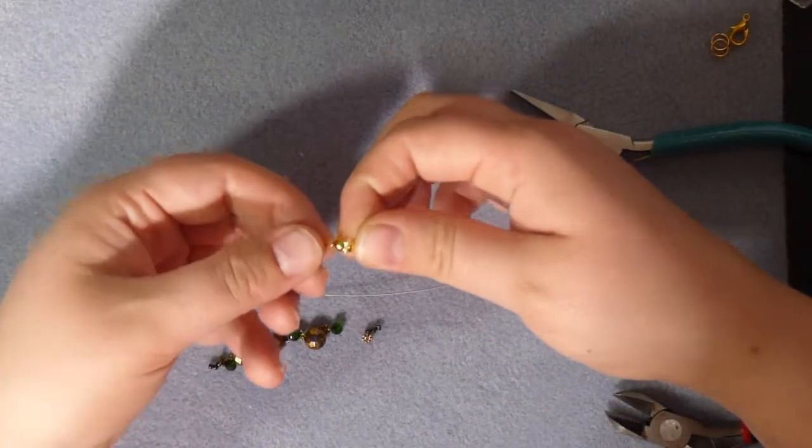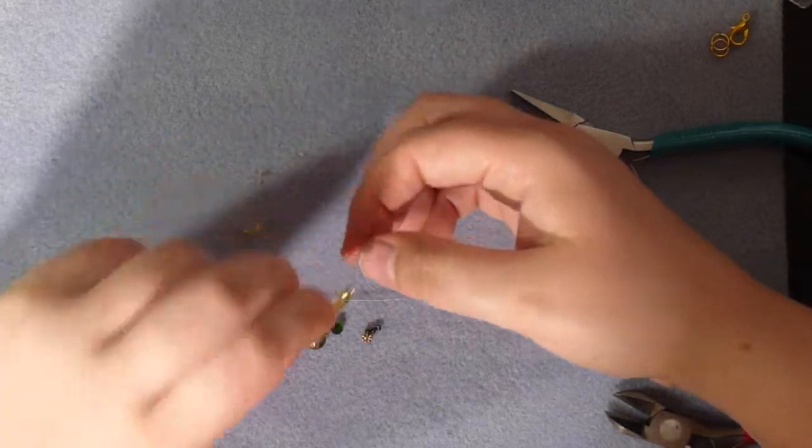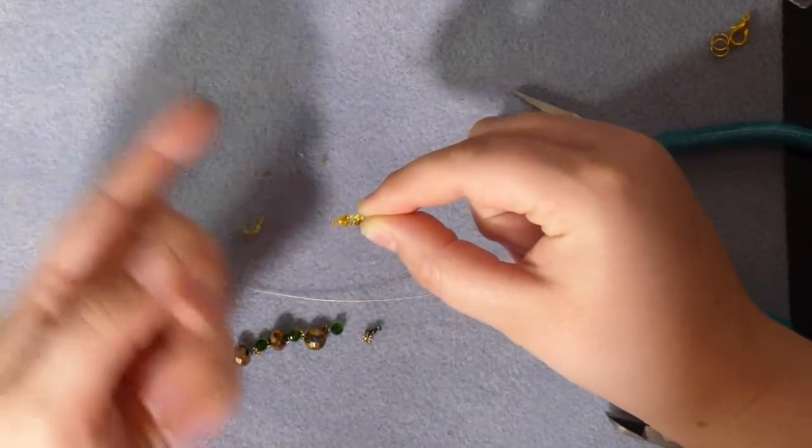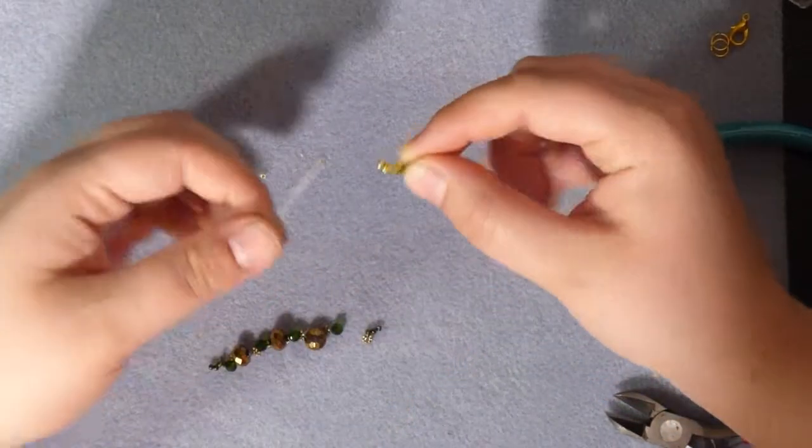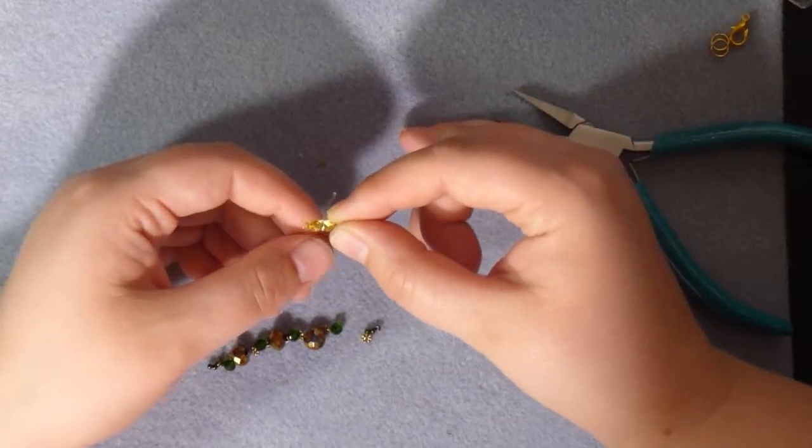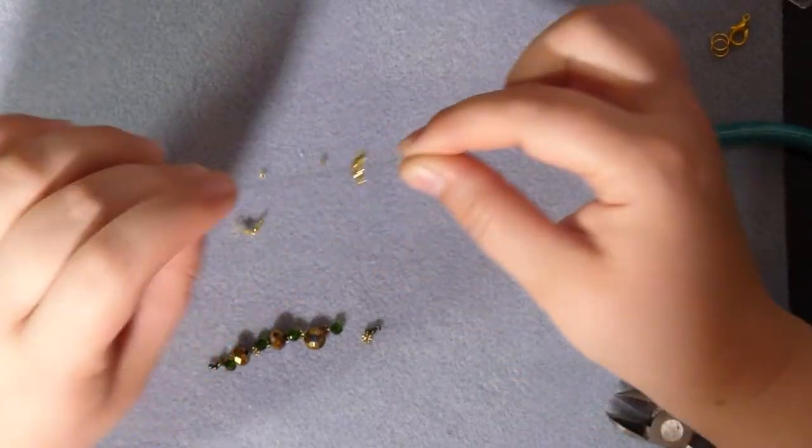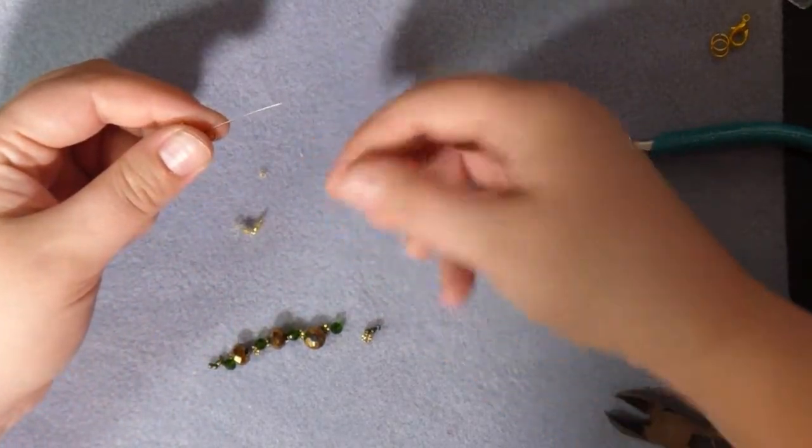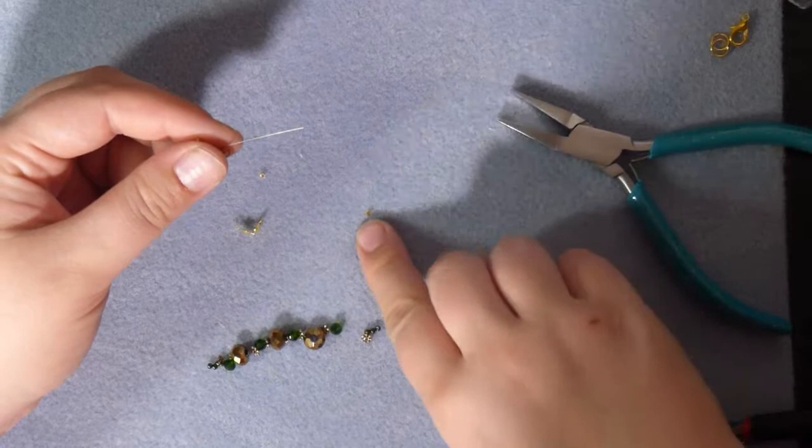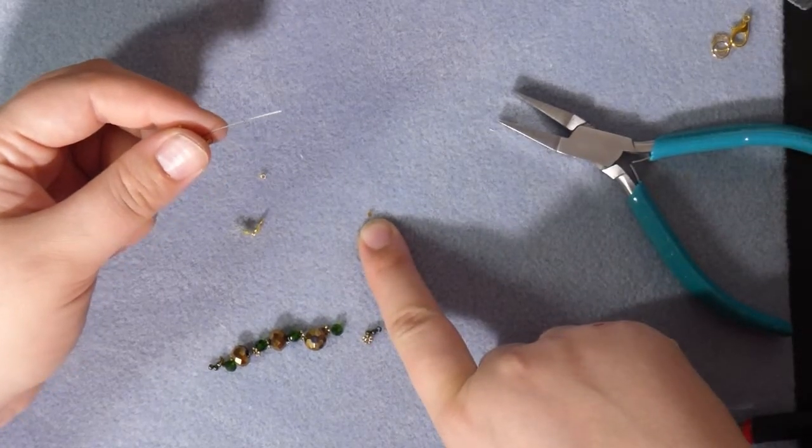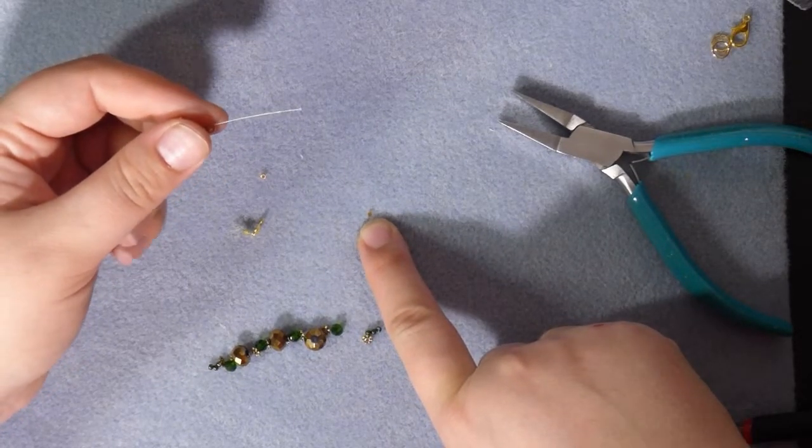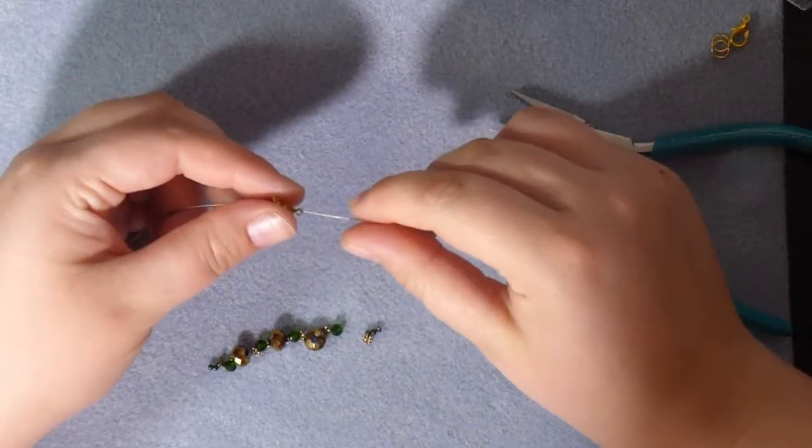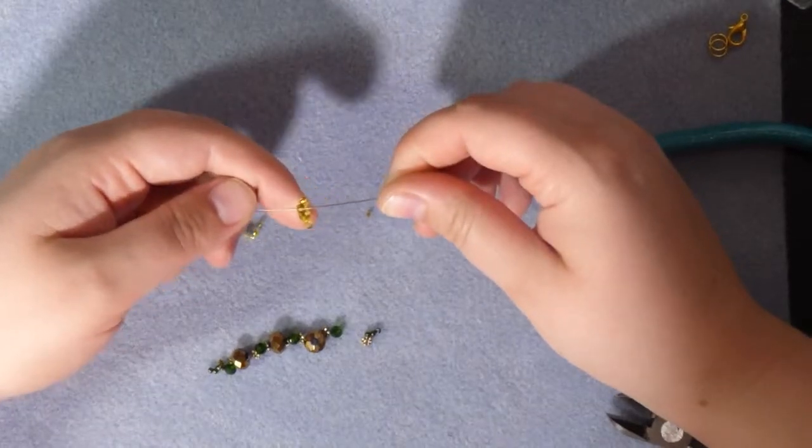How they work is they're like two little shells with a hole in the middle, so you pop your tiger tail through and it holds it on there. Then you use one of these tiny little beads - this is called a crimp bead, and it's basically a small piece of metal that you squash.